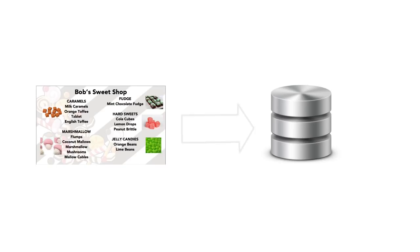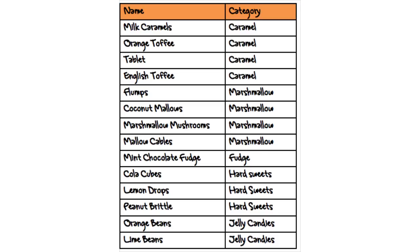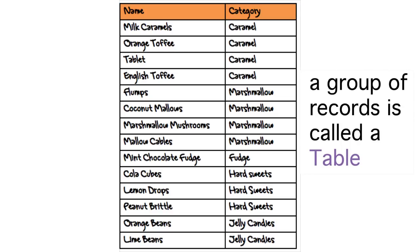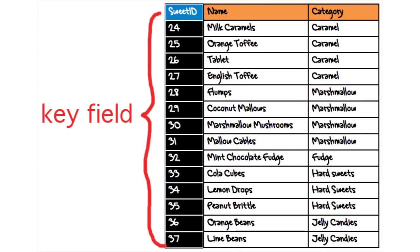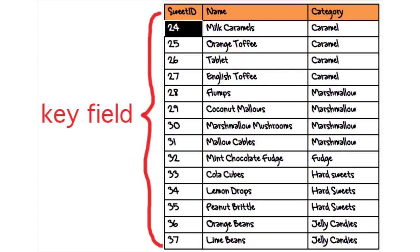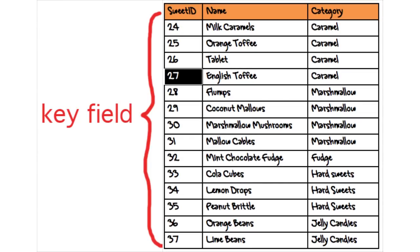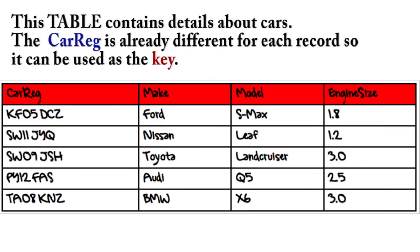Bob could store all the sweets in a database. If we did this in a flat file database, it would look like this. As you can see, Bob's information about sweets is laid out in a table. In fact, another name for a group of records about one particular thing is a table. To make using the table easier, Bob has added a key field. A key is a name given to a special column in a database where the values in the column can be used to identify particular records. Sometimes we can use a field that is already in our database as the key.